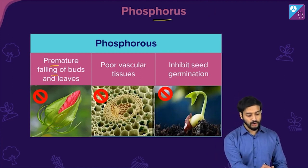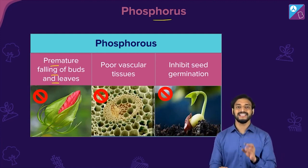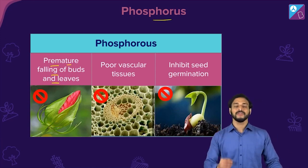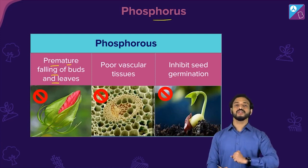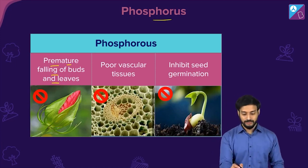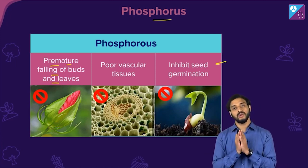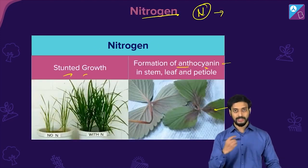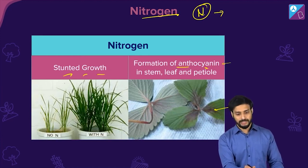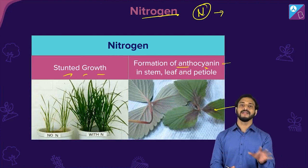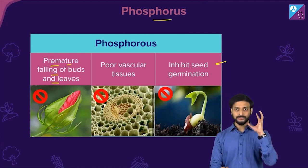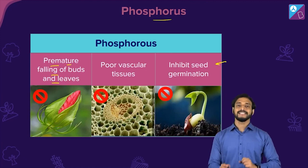For phosphorus deficiency: premature falling of buds and leaves — they fall quite early. Vascular tissues do not develop properly. Seed germination is inhibited. Quick recap: nitrogen causes stunted growth and anthocyanin formation; phosphorus causes premature falling of leaves, improper vascular tissue development, and inhibited seed germination.